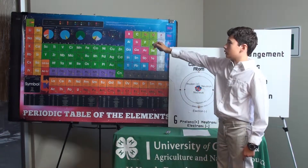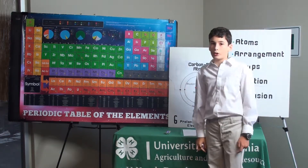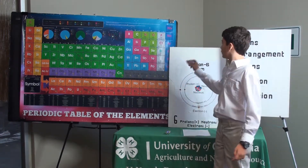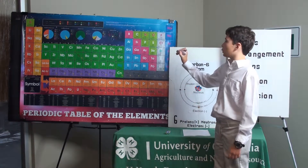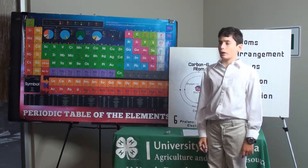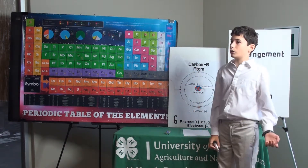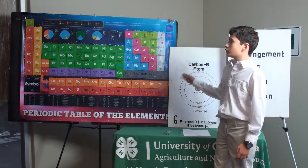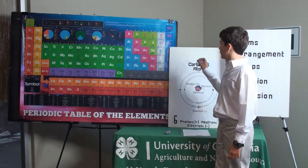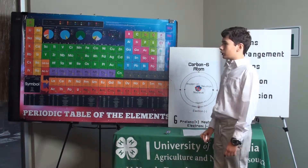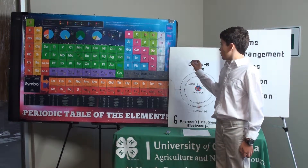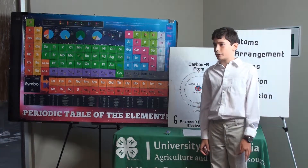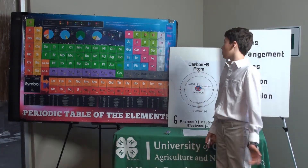This green group right here, which also includes number one hydrogen, is called the nonmetals. These are all pretty important to human life on Earth. We're carbon-based life forms, so obviously we're mostly made up of carbon. Nitrogen and oxygen make up almost all of the air we breathe, and phosphorus and sulfur are also important elements in our body. Selenium is an interesting element because if you have too much of it in your body it can be dangerous, but if you have too little it's also dangerous — so you need to keep a perfect balance.